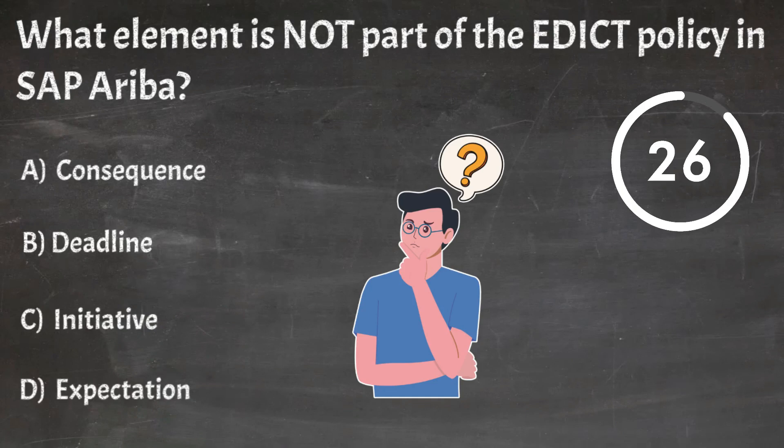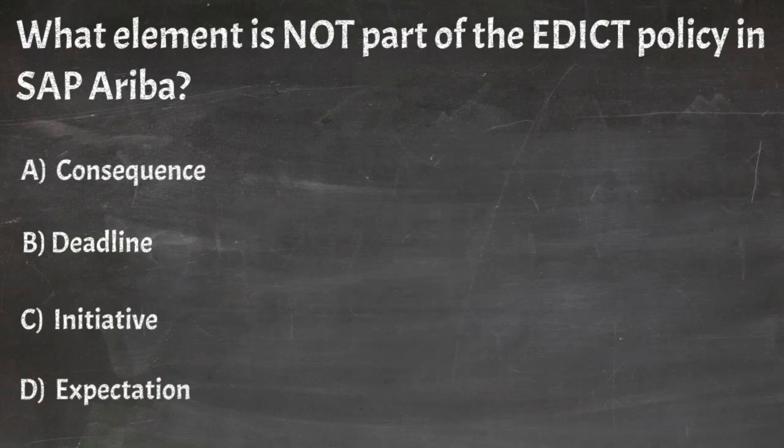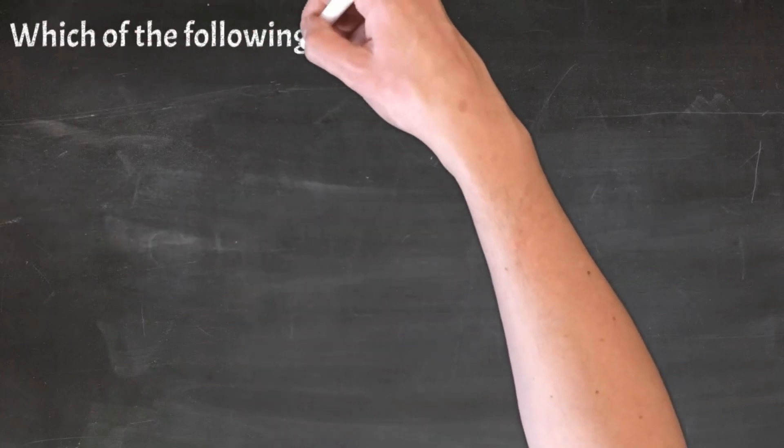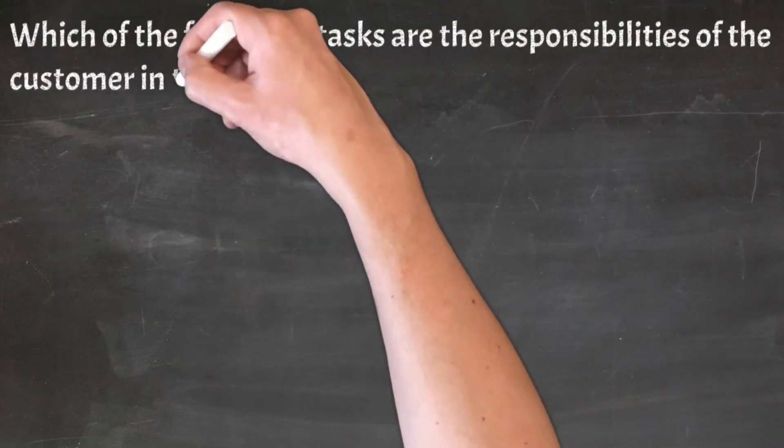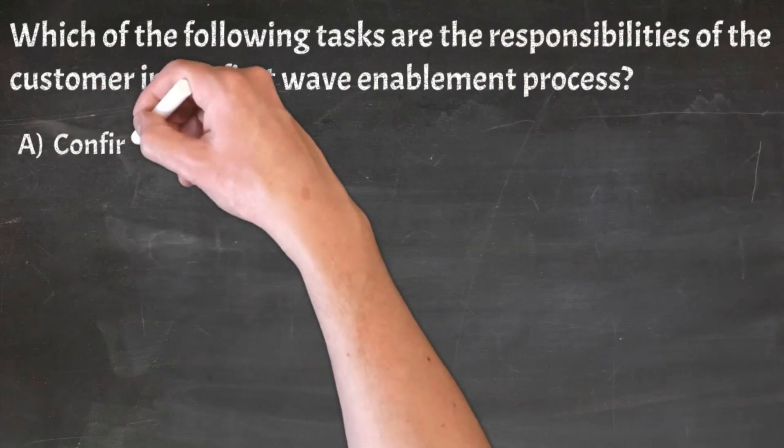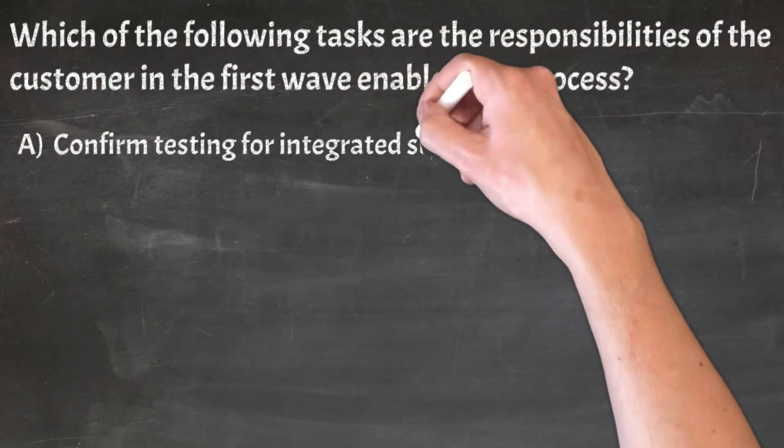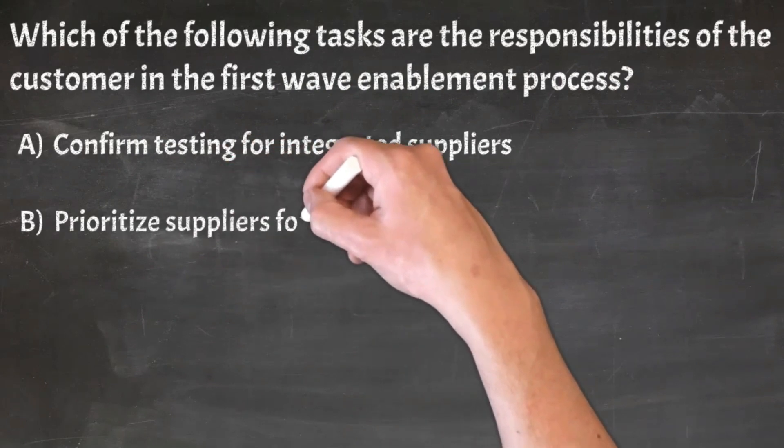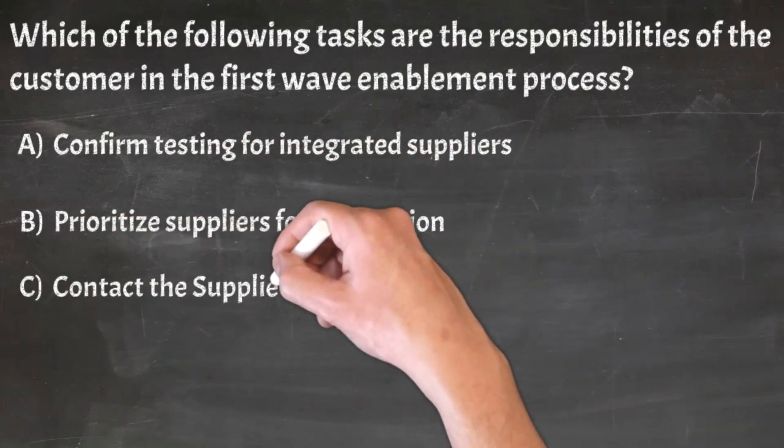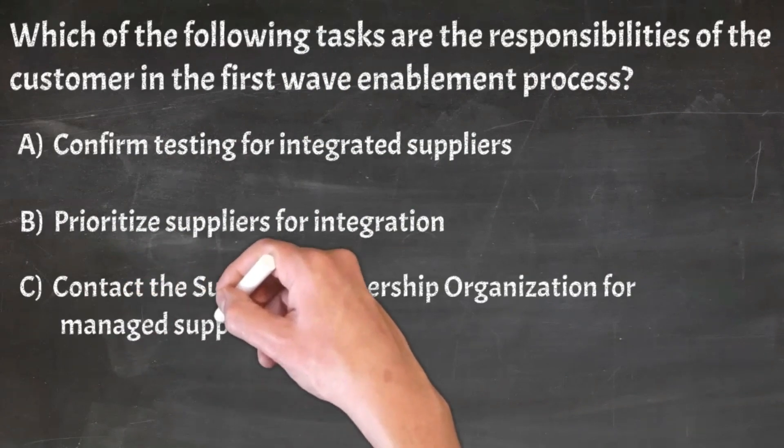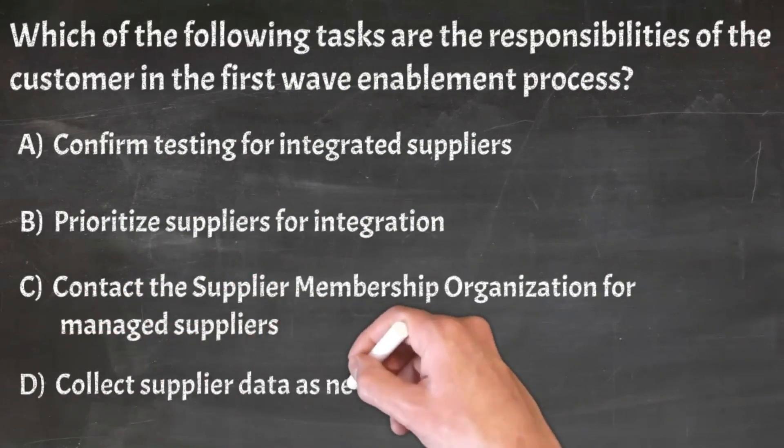Correct answer: C. Initiative. Question 5: Which of the following tasks are the responsibilities of the customer in the first wave enablement process? A. Confirm testing for integrated suppliers, B. Prioritize suppliers for integration, C. Contact the supplier membership organization for managed suppliers, D. Collect supplier data as needed.